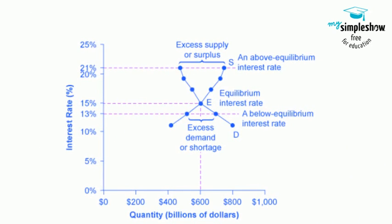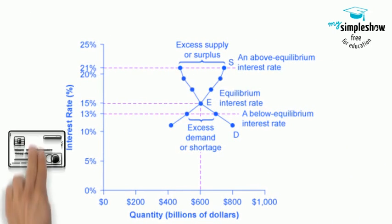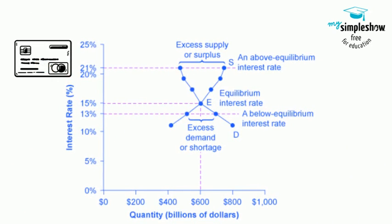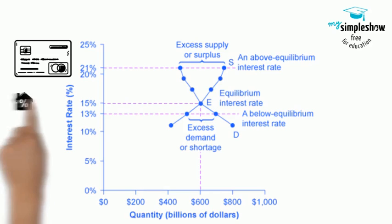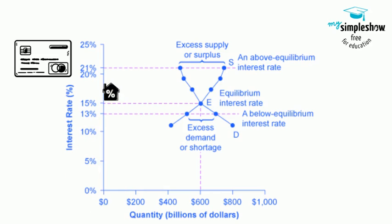In the market for credit card borrowing, the demand curve D for borrowing financial capital intersects the supply curve S for lending financial capital at equilibrium E. At the equilibrium, the interest rate — the price in this market — is 15% and the quantity of financial capital loaned and borrowed is $600 billion.